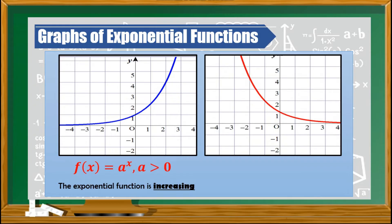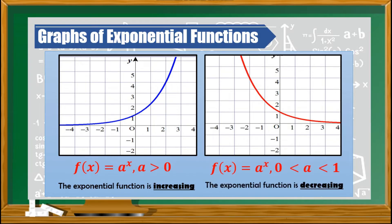Looking at the second graph, we have an example where a is between 0 and 1. If this is the case, then the graph is decreasing. The graph of an exponential function is a necessary tool in describing its behavior and characteristics. We can use this to find the domain, range, asymptotes, and intercepts.